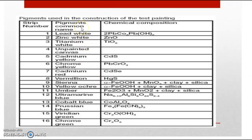We have different types of paint pigments. The first one is lead white, which gives a white coloration with chemical composition 2PbCO3·Pb(OH)2, and zinc white, and titanium white — TiO2. Lead white and titanium white are the commonly used white pigments.